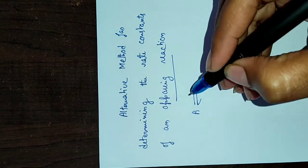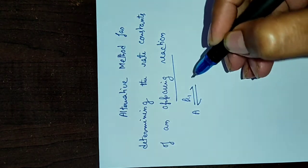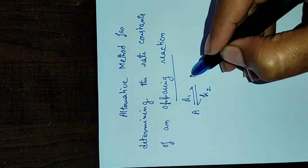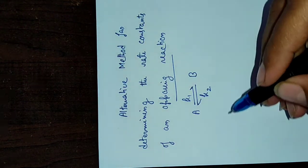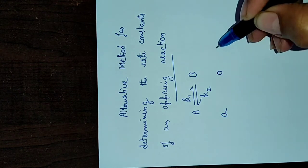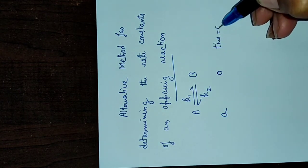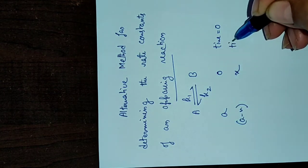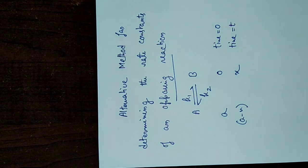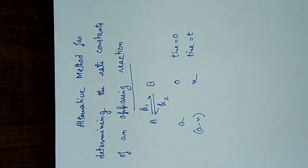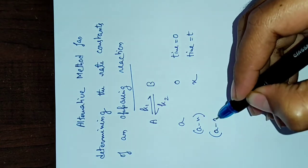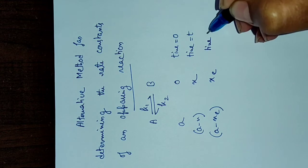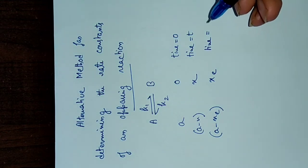We will start with the simple reaction which was considered in the previous video. At time zero, the concentration of A is 'a' and B is 0; at time t, A is (a - x) and B is x. I will introduce a new term: (a - x_e) and x_e, which represent the concentrations when the reaction reaches equilibrium.